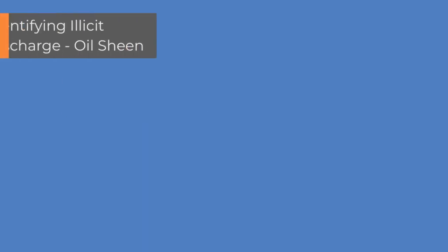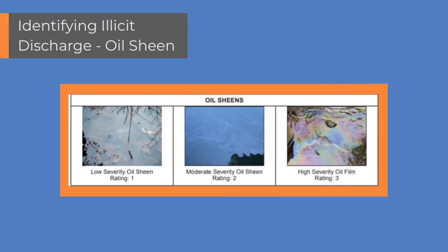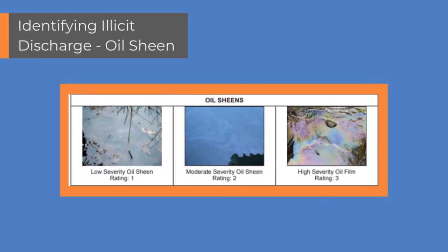You can break up oil sheens with a stick to help determine if it's caused naturally or by illicit discharge. Petroleum tends to come back together, while the naturally occurring bacteria that looks like oil will usually stay broken apart.